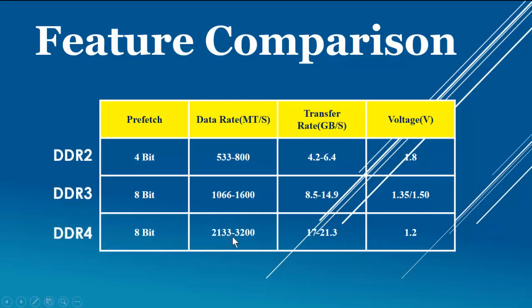which is too fast as compared to DDR2 and DDR3. The next feature is transfer rate in gigabytes per second. DDR2 has 4.2 to 6.4 GB data transfer per second.